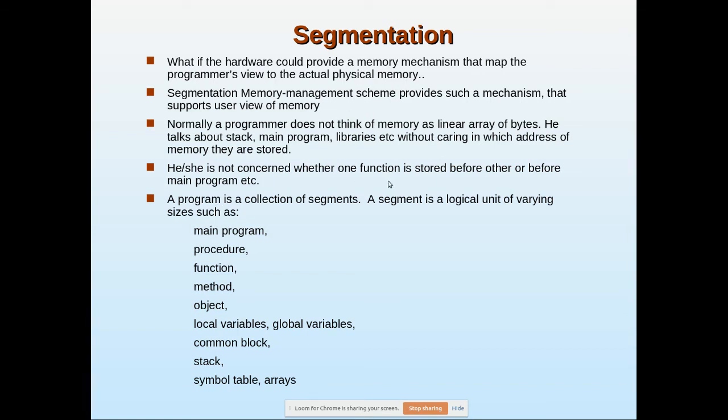A program is a collection of segments. A segment is a logical unit of varying sizes such as main program, procedures, functions, methods, objects, class declarations, local variables, global variables. Everything we see as separate segments. We consider local and global variables where we have declared them and consider that as a separate thing. In C it requires that all variables should be declared previously before use.